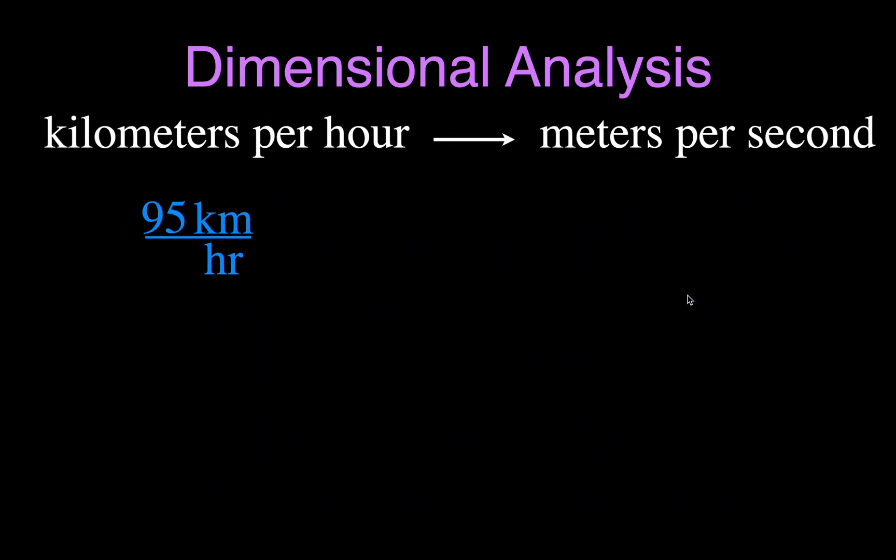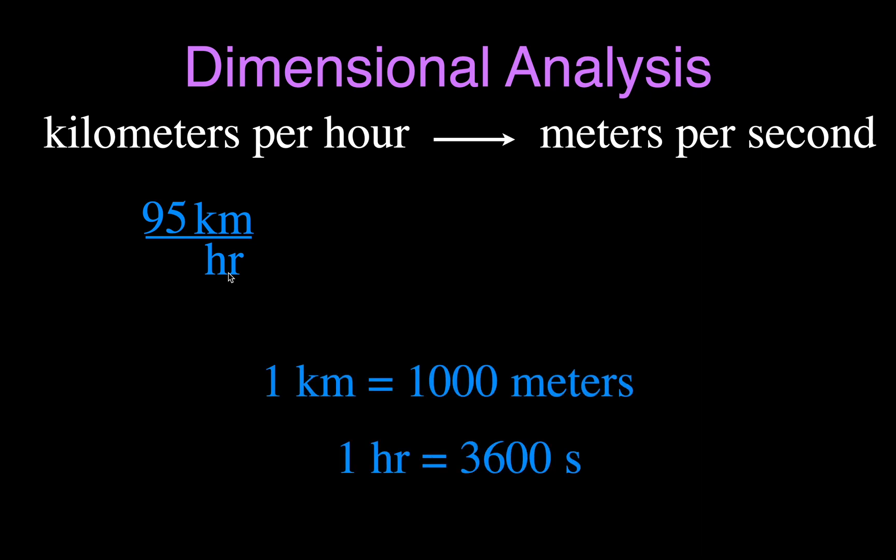Maybe one that's a little bit more applicable if you're working in science and physics, we want to convert kilometers per hour to meters per second. Really the same process. We need a conversion factor. We want to have kilometers per hour here. We want to get meters per second, so we know that one kilometer is 1,000 meters, and we know that one hour is 3,600 seconds. We can use both of those to do this conversion.